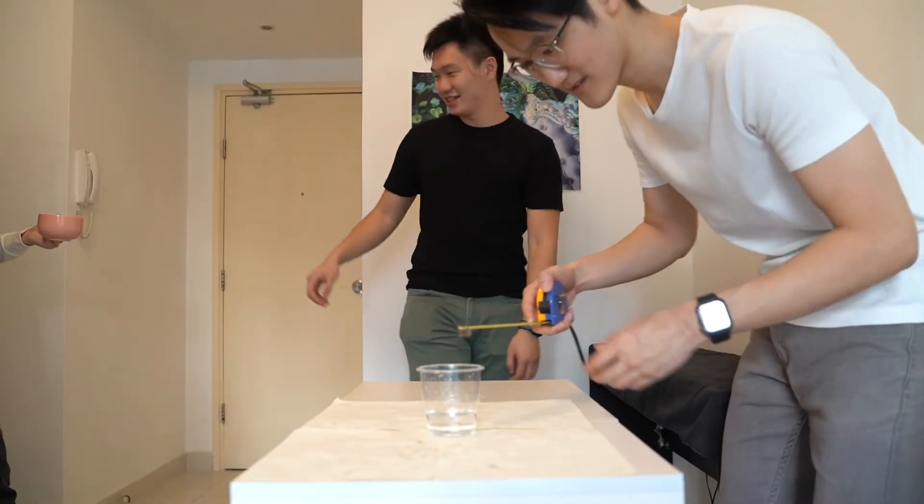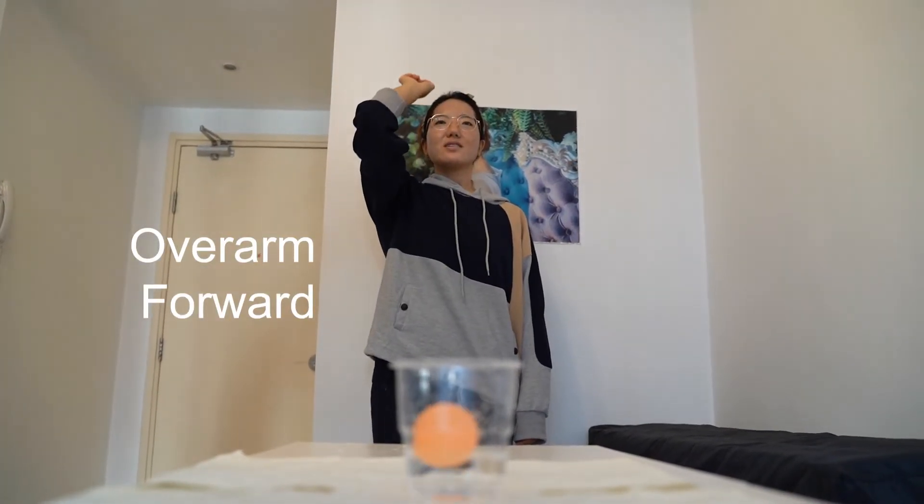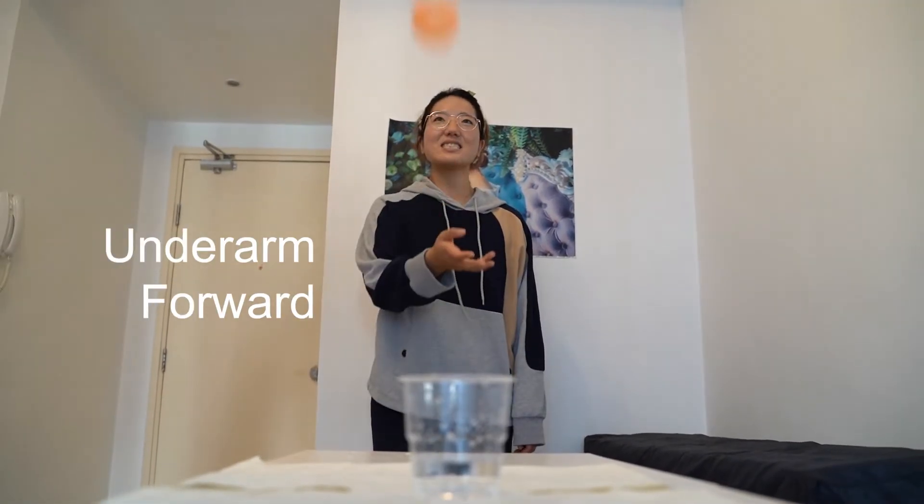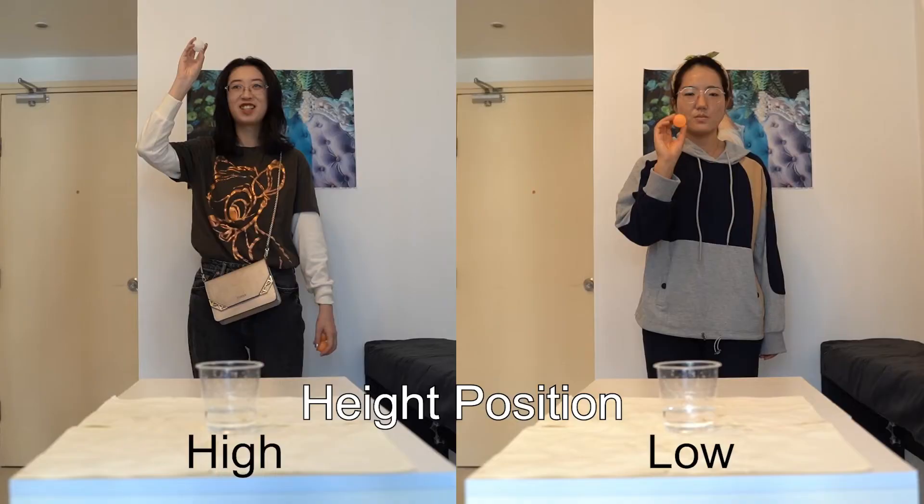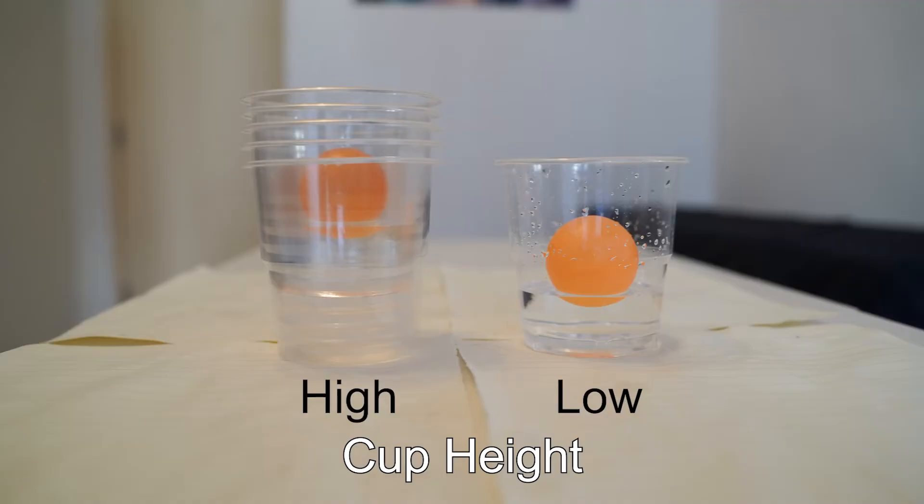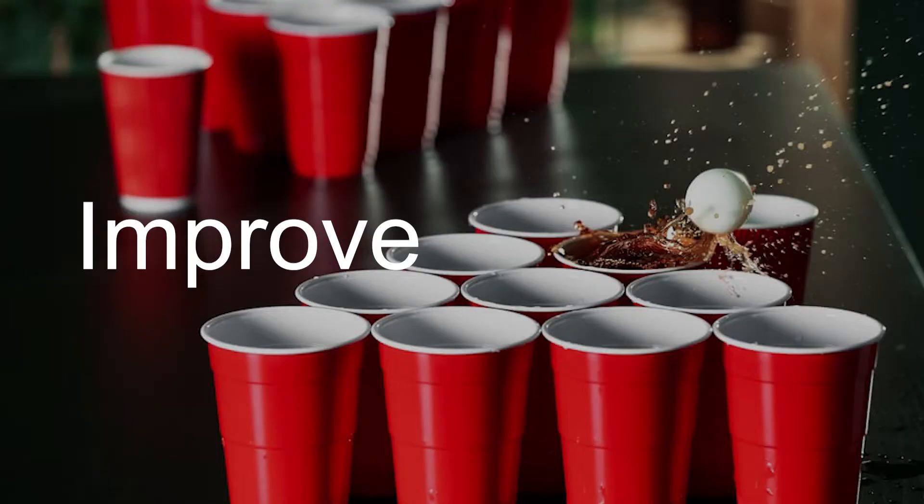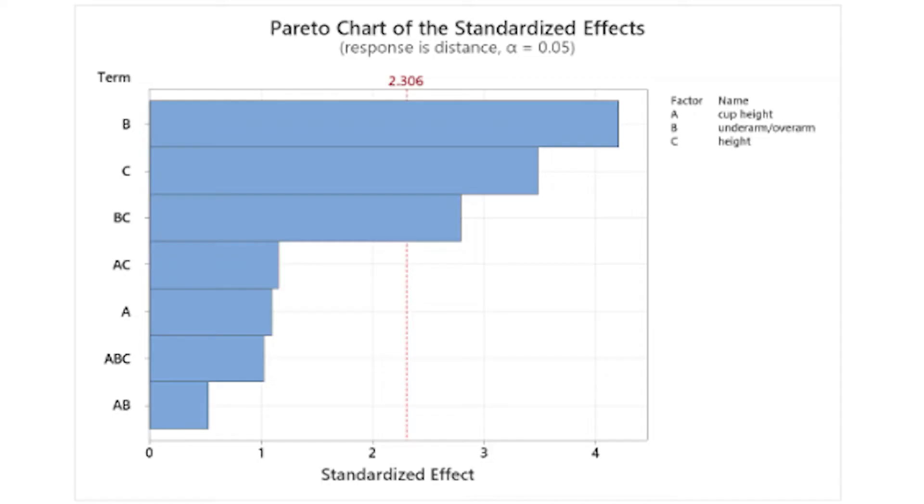The throwing techniques and positions we tested are the overarm throw while facing forward, the underarm throw while facing forward. We have also tested a combination of high and low throwing height position, as well as high and low cup height from the surface of the table. We constructed a Pareto chart with A being the cup height, B is the throwing technique of underarm slash overarm, and C is the throwing height.